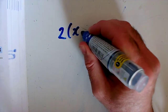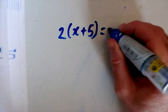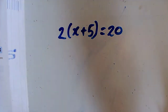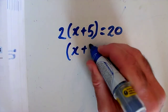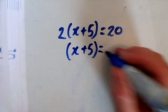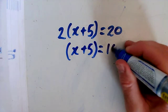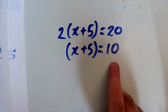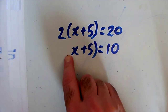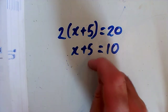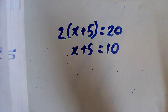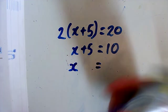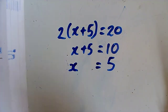Question C: 2 brackets x plus 5 equals 20, meaning 2 times everything in the bracket equals 20. To get x plus 5 on its own, I need to divide by 2, and do the same on the other side. So dividing both sides by 2, x plus 5 equals 10. The brackets don't need to be there anymore. Taking away 5 from both sides to get x equals 5.